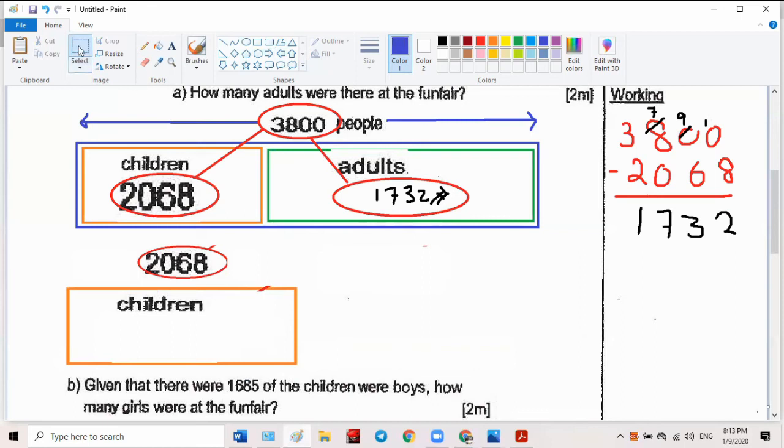1685 were boys. So how many were girls? What must you do? This is boys and this is girls. So what must we do? Think first. Would it be a bigger number than 2068 or must be smaller number? Smaller. What must you do, plus or minus? Minus.